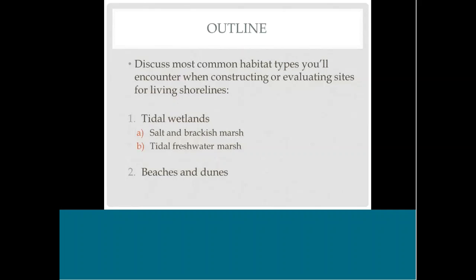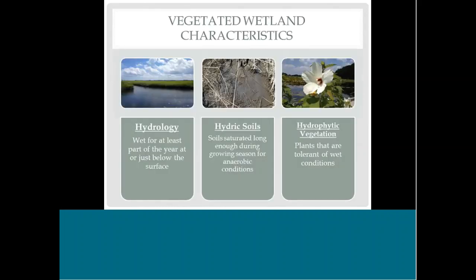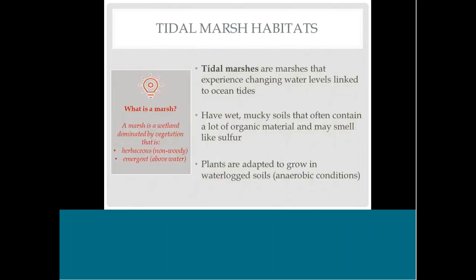Tidal wetlands, just like any other vegetated wetlands, contain three main characteristics: hydrology — meaning they're wet for at least part of the year at or just below the surface; hydric soils — meaning the soils are saturated long enough in the growing season for anaerobic conditions to occur, so the soils have very little oxygen; and hydrophytic vegetation — meaning the plants are tolerant of very wet conditions. We're talking mostly about tidal marshes here, which are wetlands with herbaceous emergent vegetation — mostly non-woody plants like grasses, sedges, and rushes.